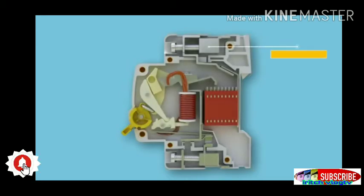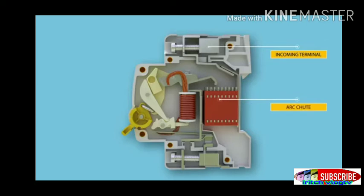Remaining parts of MCB: The incoming terminal is made up of electrolytic copper or silver alloy, and this is where the incoming phase is fixed. Next is the arc shoot, a stack of mutually insulated parallel metal plates which divide and cool the arc.